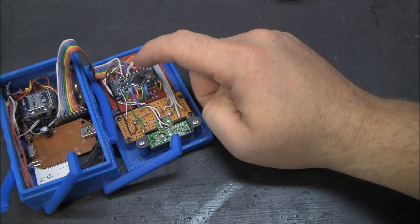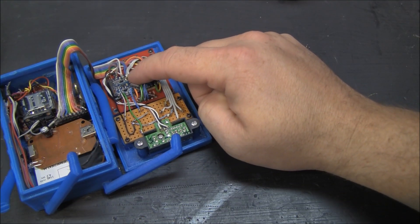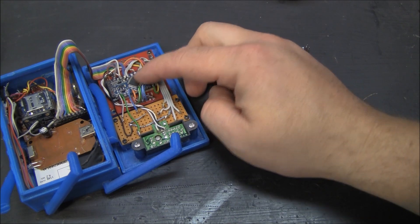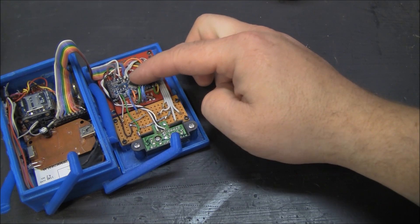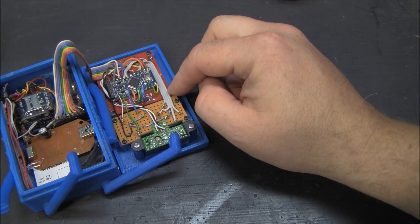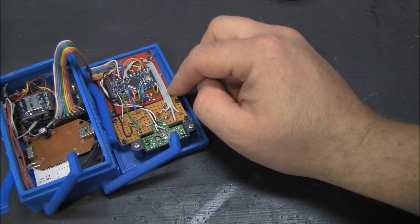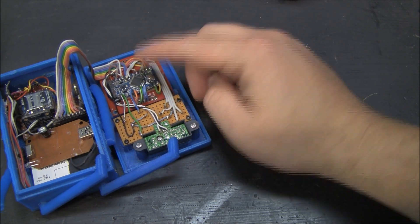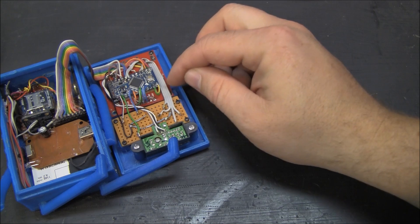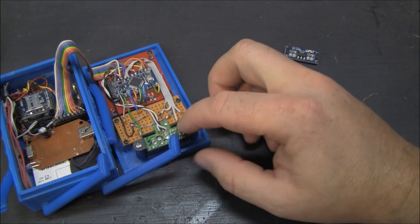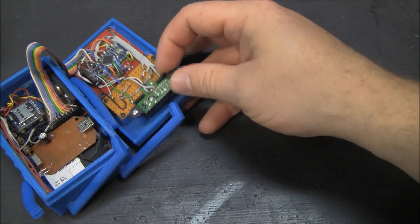The Arduino, it's providing its own 3.3 volts. This is a 3.3 volt Arduino which is important because that way I can hook it directly to the 3.3 volt LCD screen. If you're running a 5 volt Arduino it's just a mess. You gotta have a little level shifter to drive the LCD screen. And then this Sharp Infrared sensor.